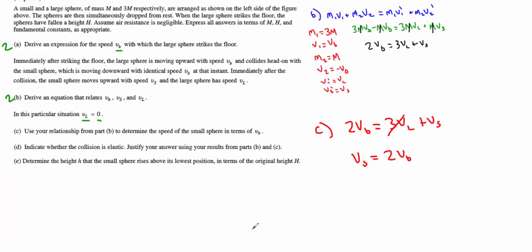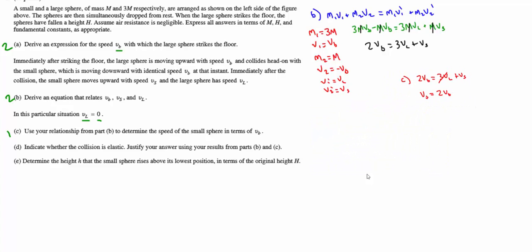Part D: indicate whether the collision is elastic, justifying using parts A, B, and C. Some students will say it is elastic simply because they bounce — that's not always the case. For these AP exam problems where you must justify, you actually have to determine the initial kinetic energy of the system and compare it to the final kinetic energy. If they are equal, it is elastic; if not, it is not elastic.